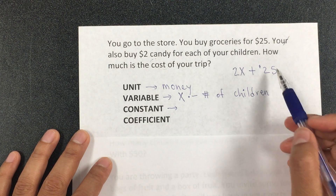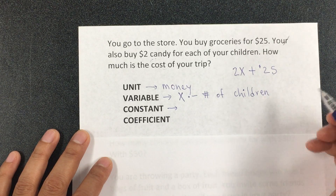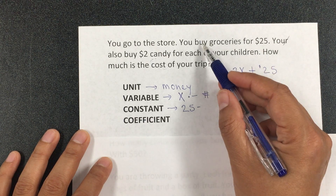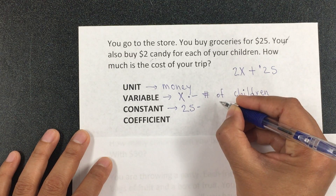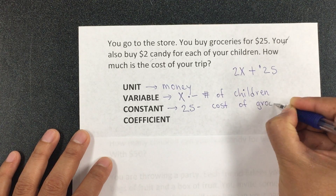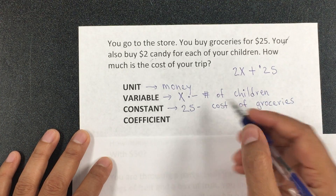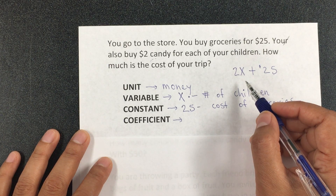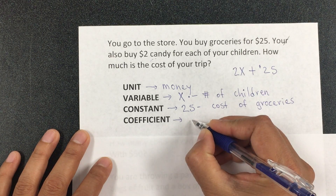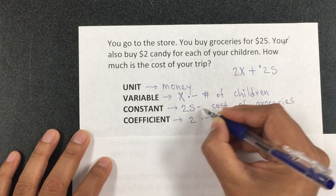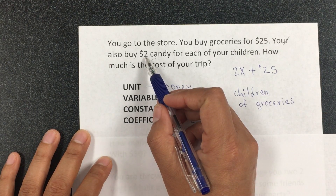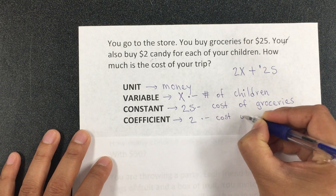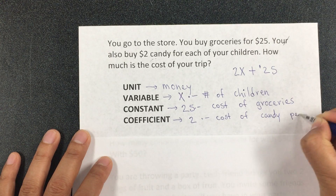The constant here is $25, which represents the cost of the groceries — a fixed value. The coefficient is $2, the number multiplying the variable x. The $2 represents the cost of candy per child — the candy money you're spending for each one child.